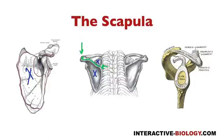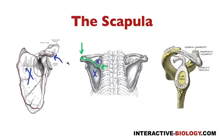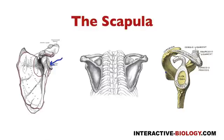One more projection on the scapula is an anterior projection called the coracoid process, which is very significant — it kind of looks like a bent finger or bent thumb. So the two processes are the coracoid process and the acromion process. Now let's talk about the glenoid fossa. We've spoken about that already — it is this structure right here, the glenoid fossa.